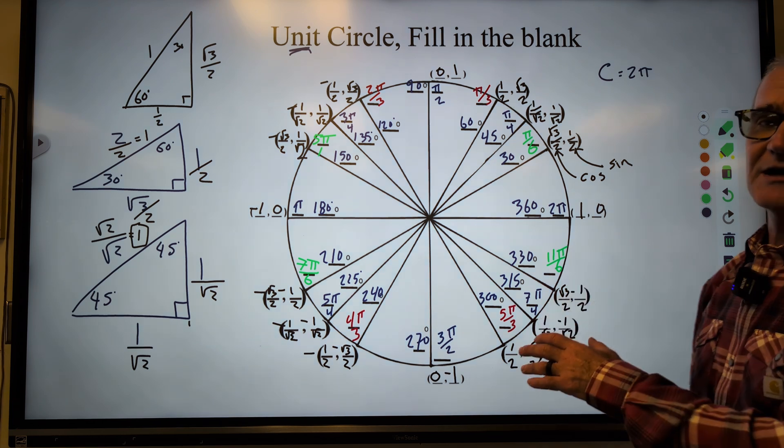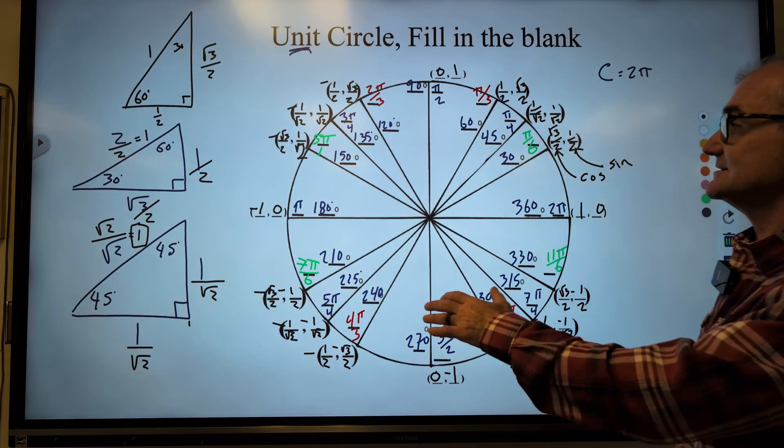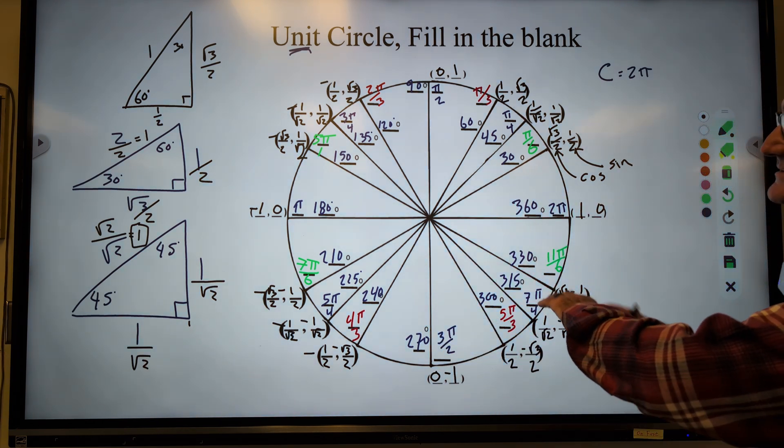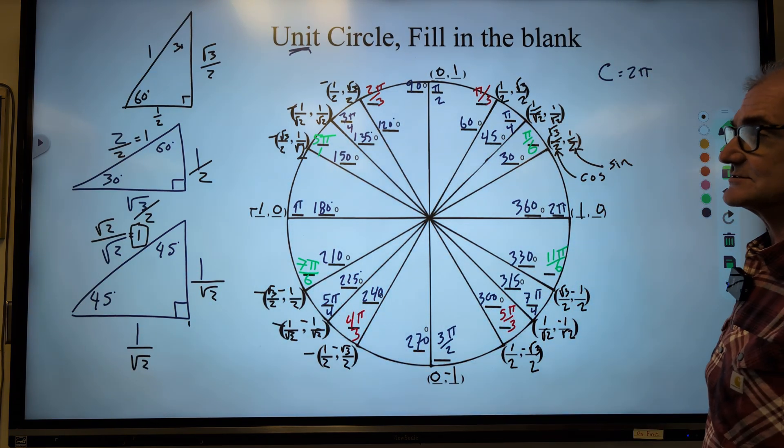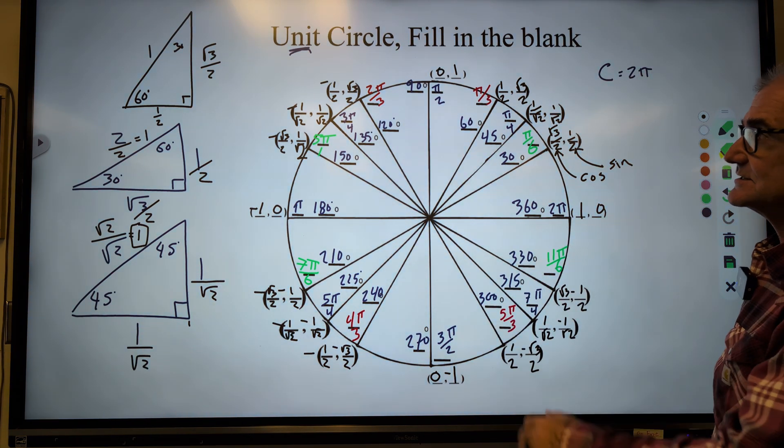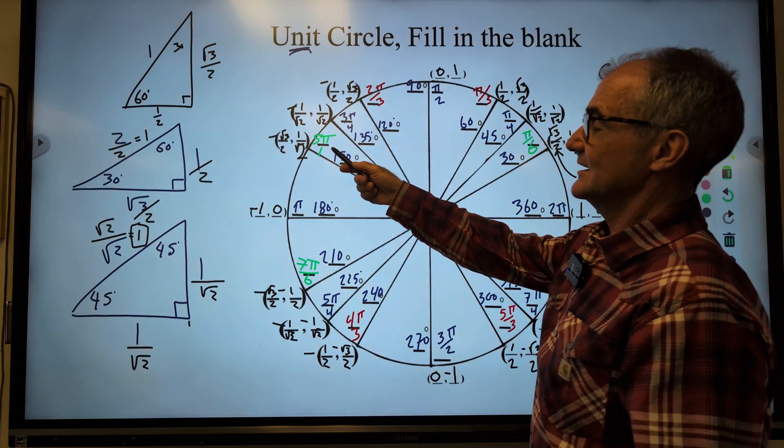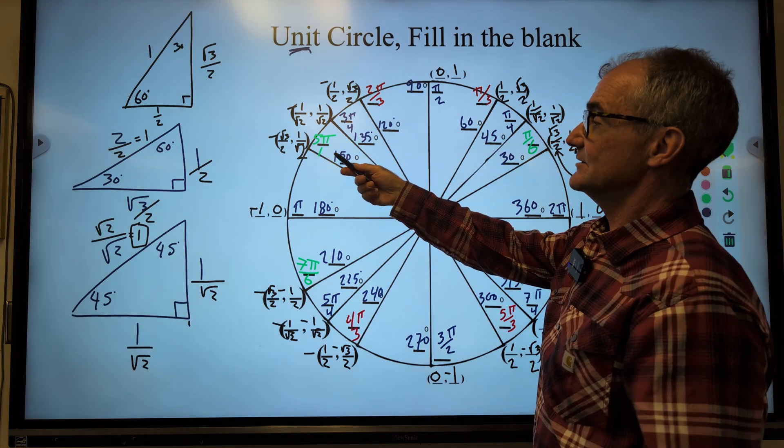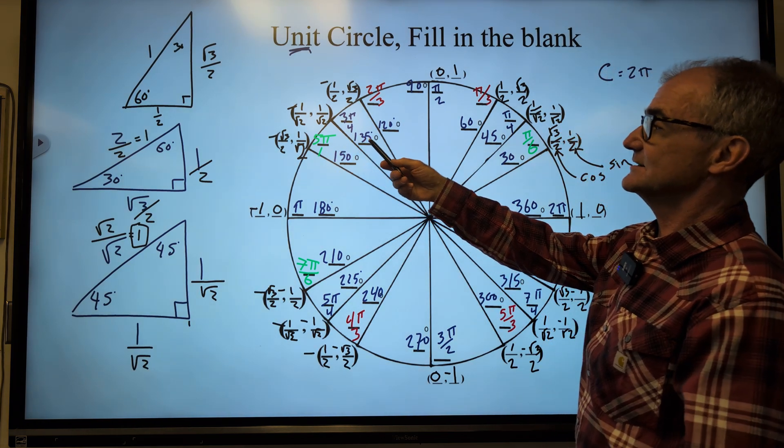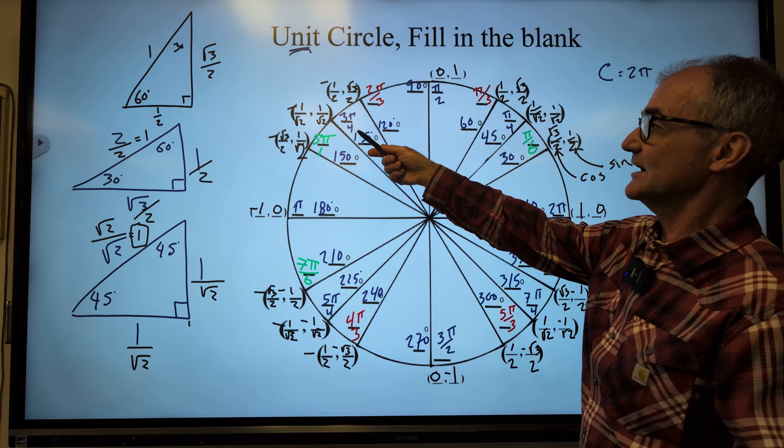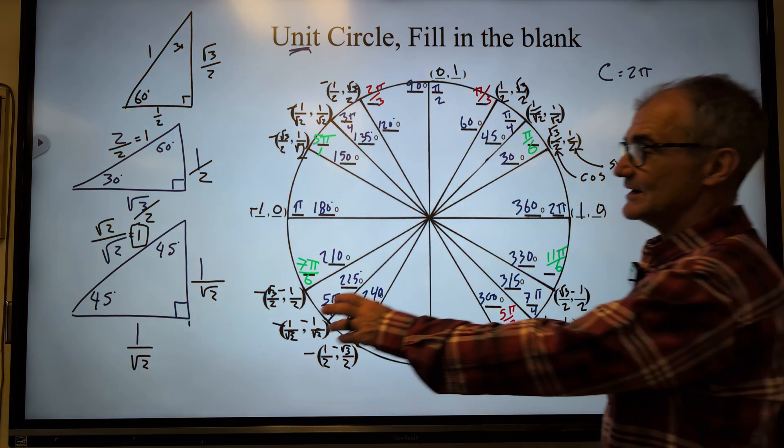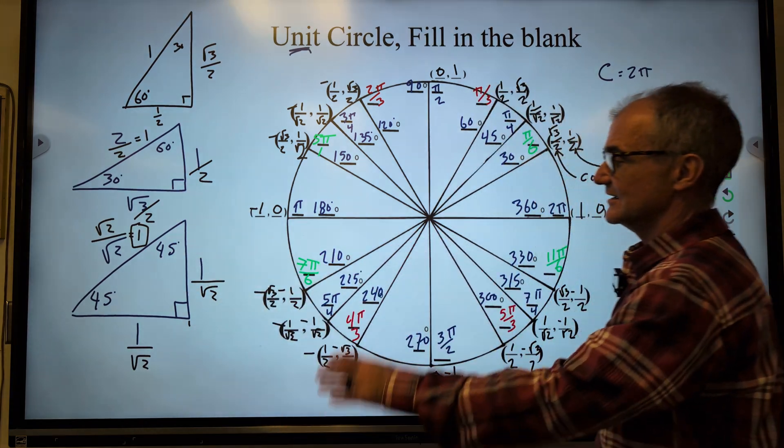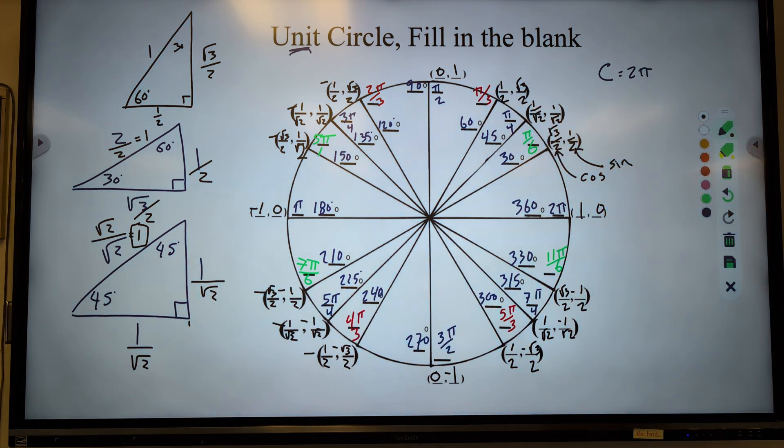So you're not supposed to memorize this. It is supposed to make sense. Basically, you're taking this circle, opening it up, and creating a few different rulers out of it. One of the rulers has a denominator of 30 or 6. One has a denominator of 4 for 45. One has a denominator of 3 for 60s. You do have to have these two triangles down before you can create the unit circle.